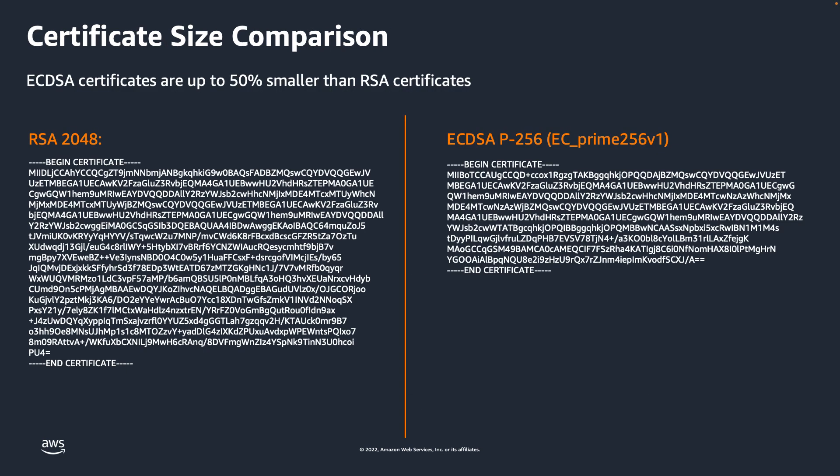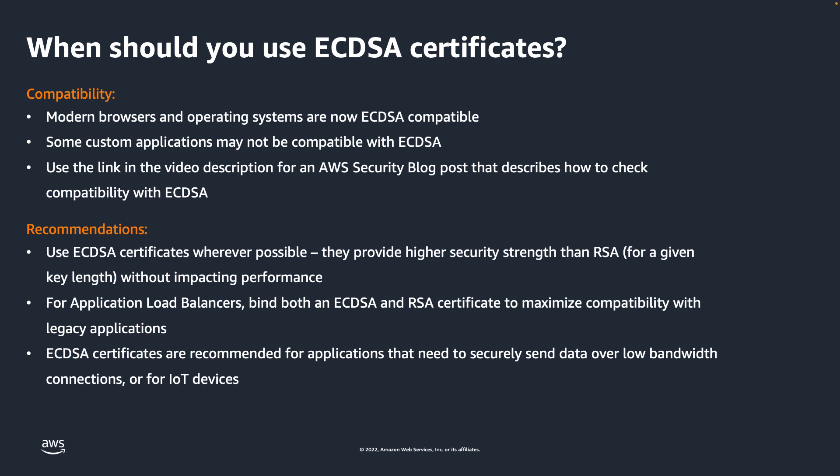ECDSA certificates also have up to a 50% smaller certificate size when compared to RSA certificates, and are therefore more suitable to protect data in transit over low bandwidth or for applications with limited memory and storage such as IoT devices. You should immediately see the size difference between the two certificates on this slide. Modern browsers and operating systems are now ECDSA compatible. That said, some custom applications may not be ECDSA compatible. There is a link in the description of this video to an AWS blog post that includes a way to test if your application is compatible with ECDSA certificates.